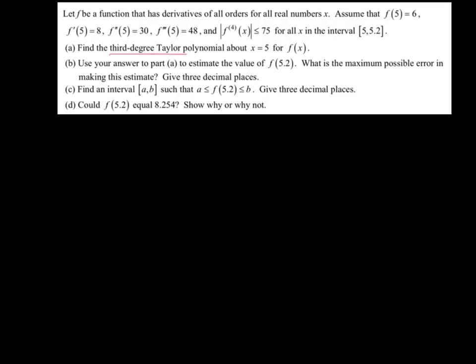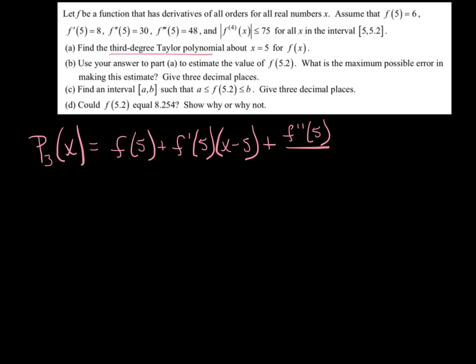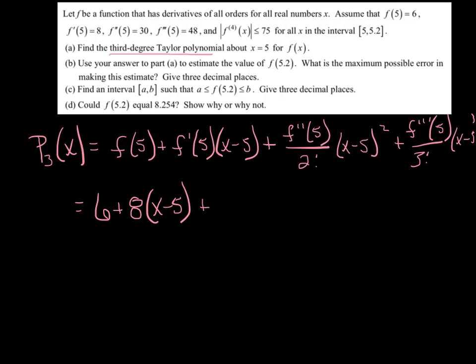Quite a bit of work here, this is going to be our last problem for the night. First, they want me to write the third degree Taylor polynomial. P sub 3 of x, it's centered at 5, so it's going to be f of 5 plus f prime of 5 times x minus 5, and watch out for this little bear trap: that term has to be divided by 2 factorial times x minus 5 squared, and then the third derivative evaluated at 5 divided by 3 factorial times x minus 5 raised to the third. We'll clean that up: f of 5 was 6, f prime was 8 times x minus 5, 30 divided by 2 is 15 times x minus 5 squared, and 48 divided by 6 is 8 times x minus 5 to the third power. There's my third degree polynomial.